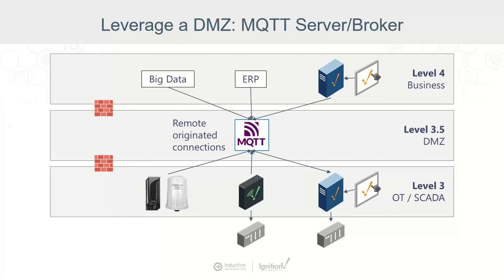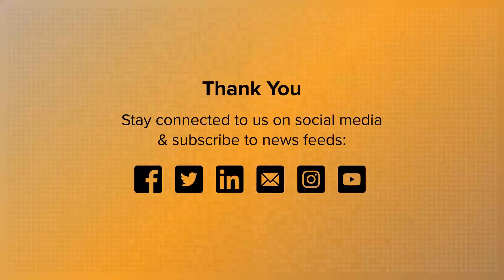We'll talk about MQTT more in the next tip, but we can put our MQTT broker in the DMZ and have data sent to it, with business systems connected to the broker to get that information. DMZs can be leveraged for a lot of great use cases, but ultimately they provide a very high level of security through network segmentation. By having that segmentation, you can really limit what's going through and have a much more robust and secure system.